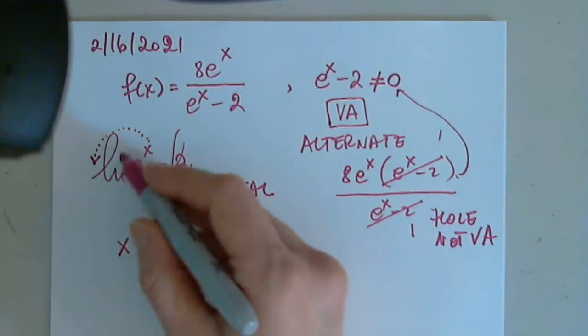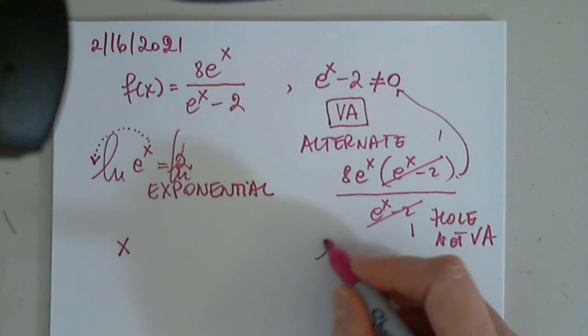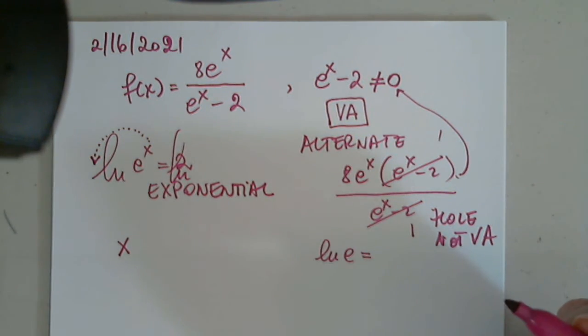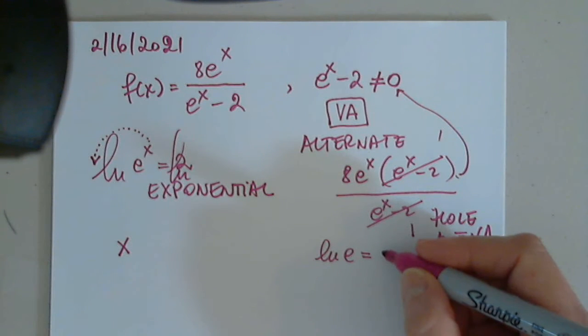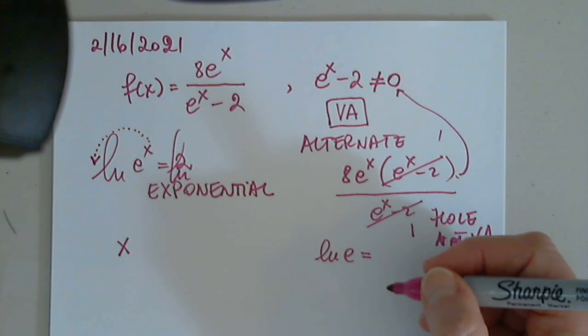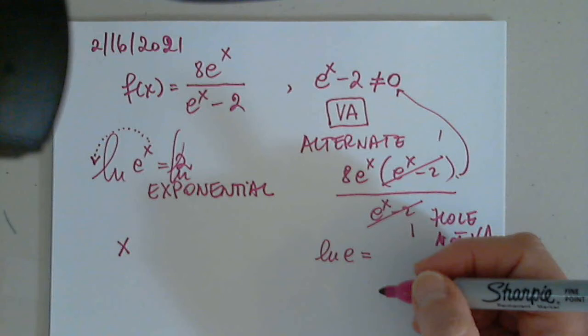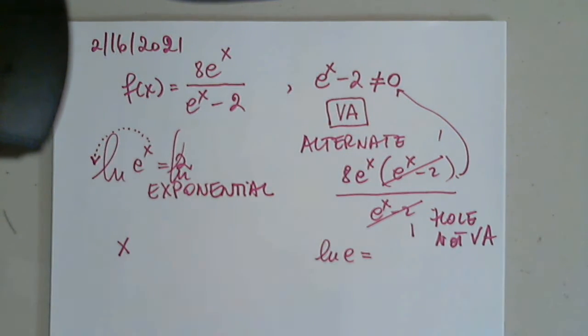Natural log allows us to put the power in front as a factor. So we have x times natural log e, but we know that natural log e equals... I'm not sure about this one. Is it one? Of course. Just put it in the calculator.